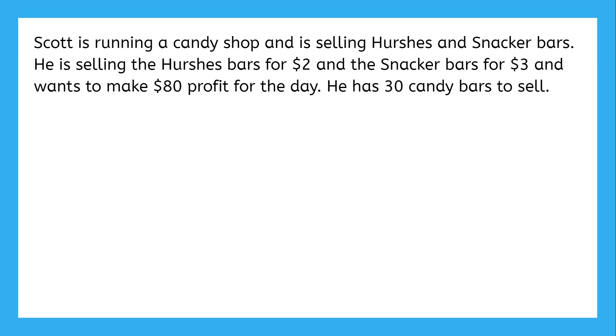Okay, the first thing we need to do is identify the unknown amounts, the variables. We know the cost of each candy bar. We know how much money Scott wants to make. And we know how many candy bars there are. So what information is missing?